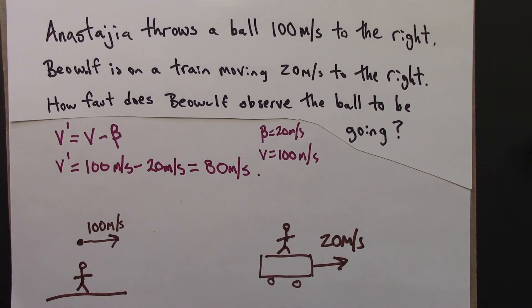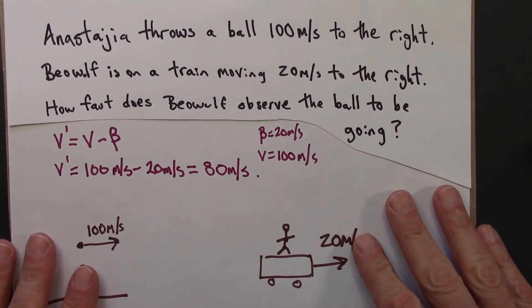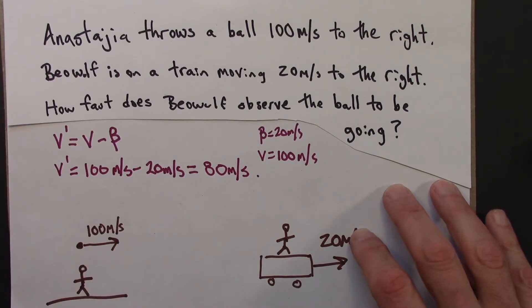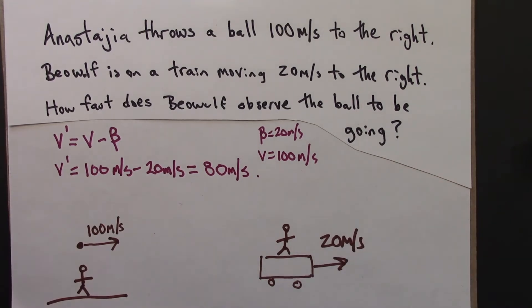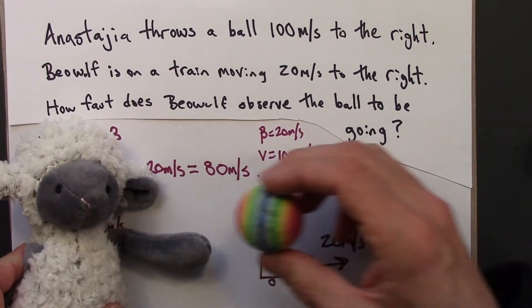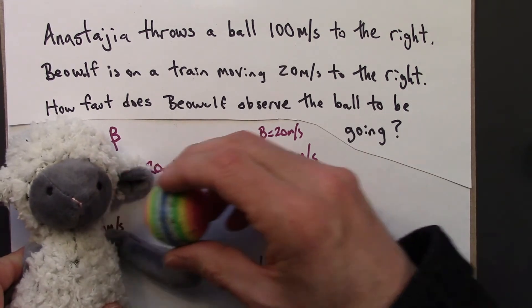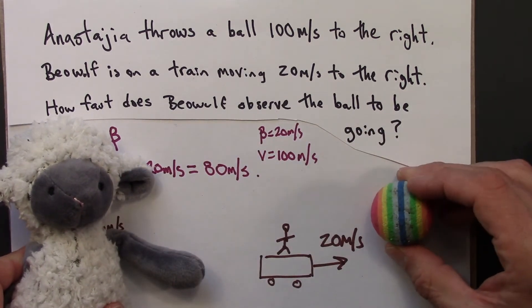Alright, so let's think physically about what this is telling us. So Anastasia throws the ball at 100 meters per second. And so she would observe in one second that this ball travels 100 meters.